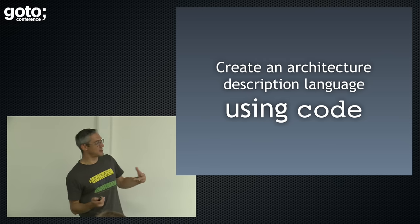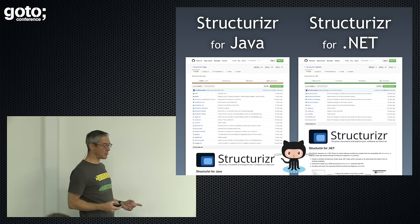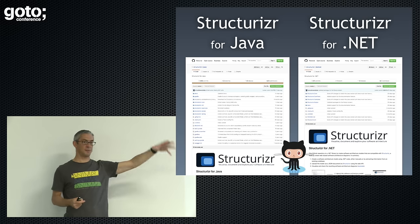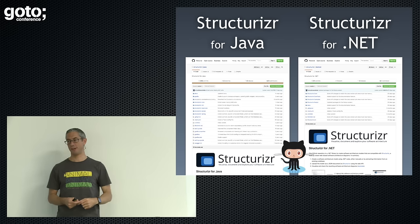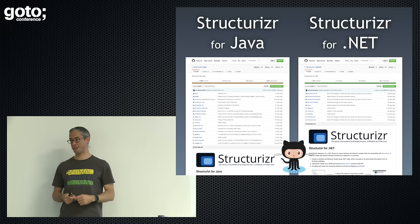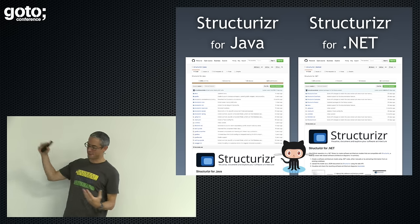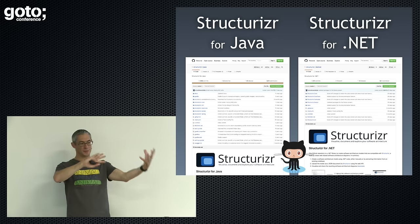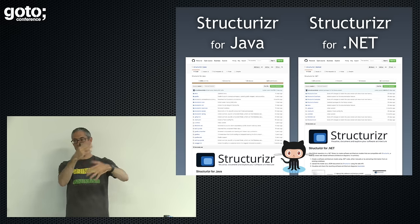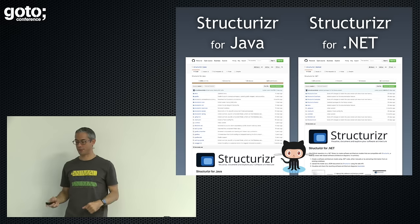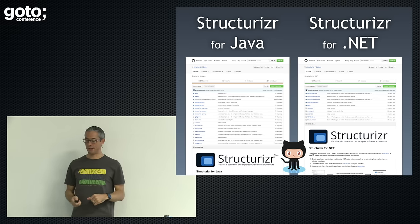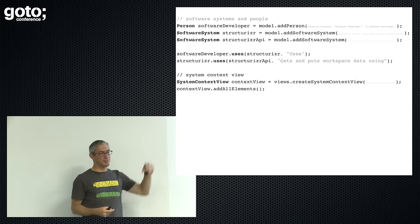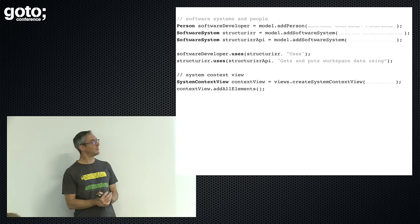Let's take all of these things, chuck them in a pot, stir it around, and come up with an architecture description language using general-purpose code — the same code we're using to build our systems. That's the other piece of Structurizer. There are two open-source libraries — one for Java, one for .NET — that let you create people, software systems, containers, and components and wire them together to describe your software architecture.